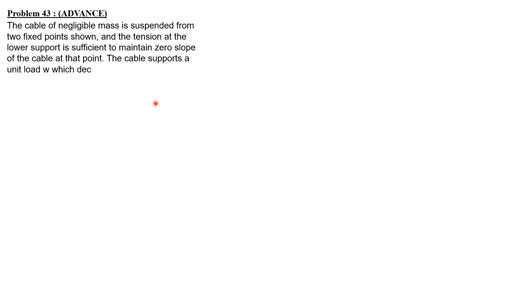Let's have the solution to example 43, and I consider this as an advanced problem. The cable of negligible mass is suspended from two fixed points shown, and the tension at the lower support is sufficient to maintain zero slope of the cable at that point. The cable supports a unit load W which decreases from 100 N per meter at x equals 0 to 40 N per meter at x equals 30 meters, with a decrease proportional to x squared. Determine the equation of the curve assumed by the cable.